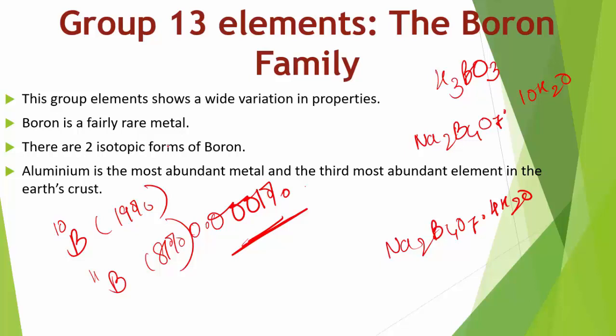Aluminium is the most abundant metal and the third most abundant element in the earth's crust at 8.3% by mass, after oxygen (45.5%) and silicon (27.7%). Important minerals of aluminium include bauxite Al₂O₃·2H₂O and cryolite Na₃AlF₆. In India, aluminium is found as mica in Madhya Pradesh, Karnataka, Odisha, and Jammu & Kashmir.